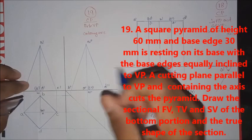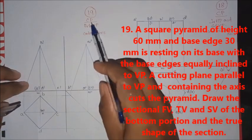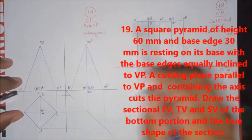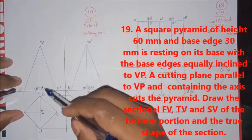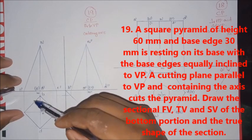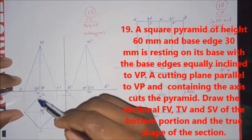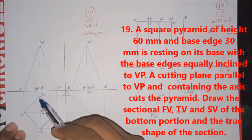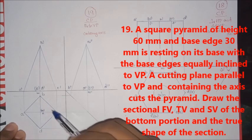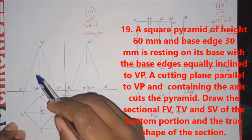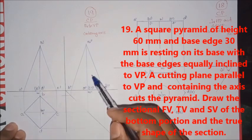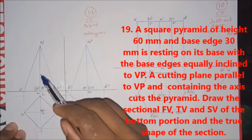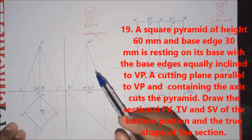Question number 19. This is a square pyramid which is resting on HP, equally inclined to VP. Now the next section is a section of the top view.